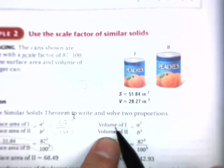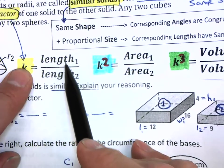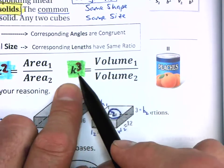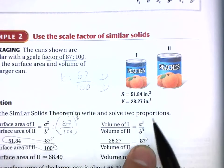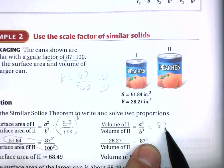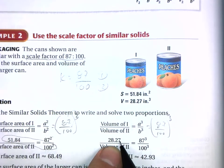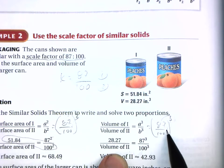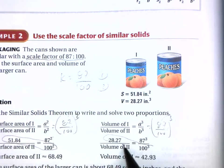For the volume, we use the ratio of volumes equal to the scale factor cubed: (87/100)³. Plug in the known volume of 28.27 for can one, distribute the exponent to get 87³ over 100³, then cross-multiply to solve for the volume of can two. Those are the types of problems we will be doing in class.